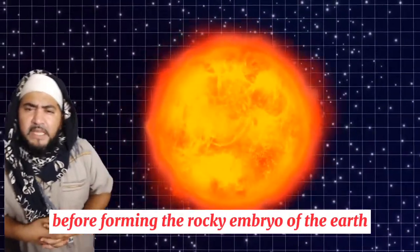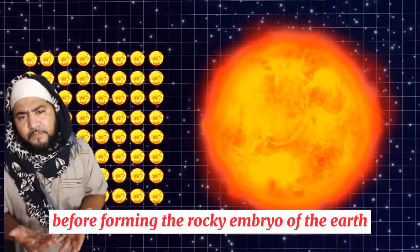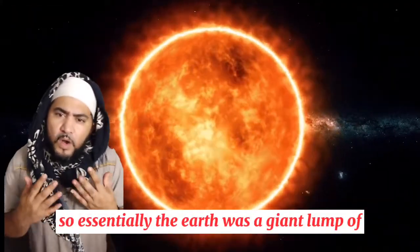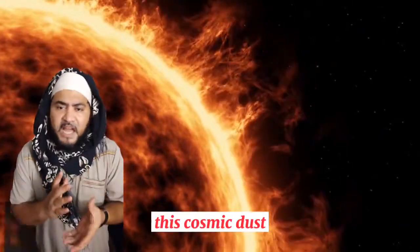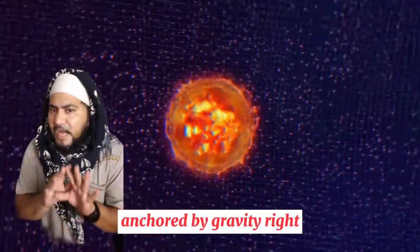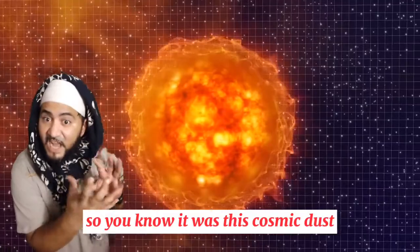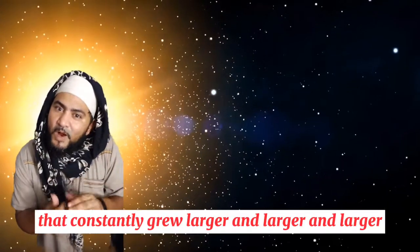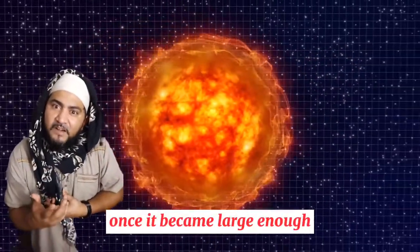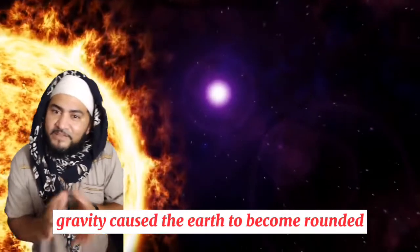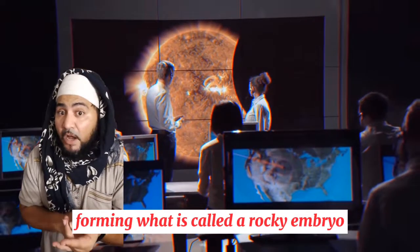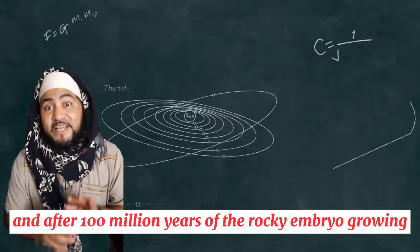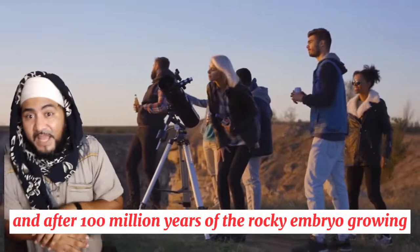So essentially, the earth was a giant lump of this cosmic dust anchored by gravity. Life was anchored by gravity that constantly grew larger and larger. Once it became large enough, gravity caused the earth to become rounded, forming what is called a rocky embryo.